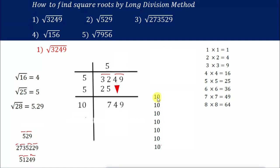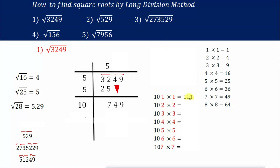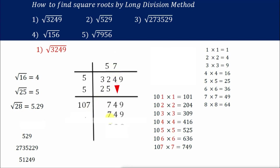From the next step, what you do is take the number 10 and start pairing like 101×1, 102×2, 103×3, and so on. You have to search for a number nearest to 749 or equal to 749. Trying: 105×5=525, 106×6=636 — still less than 749. So go for the next number: 107×7=749. There we go — 107×7 is exactly 749.